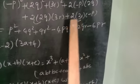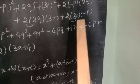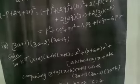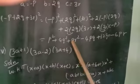The last term, 2 into 3r into minus p: the sign is plus into minus, so we get minus. Multiply the numbers: 2 into 3 is 6, so minus 6pr. Therefore, minus p plus 2q plus 3r whole square is equal to p square plus 4q square plus 9r square minus 4pq plus 12qr minus 6pr.